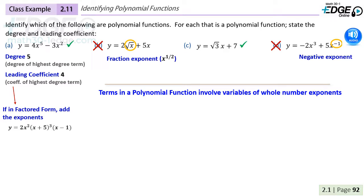If you had something like y equals 2x squared times x plus 5 to the 3 times x minus 1, you would add the exponent of 2 on the x, the exponent of 3 on the first bracket, and the invisible exponent of 1 on that second bracket, and 2 plus 3 plus 1 would give you the degree of 6.